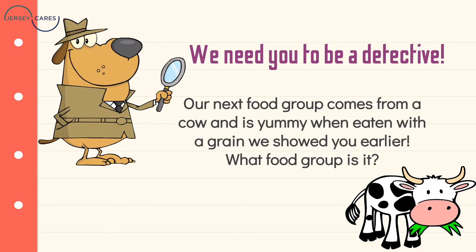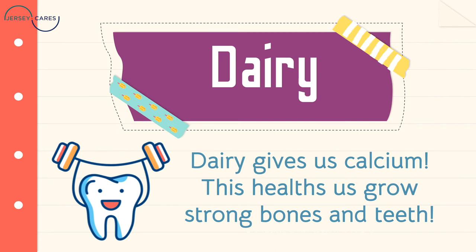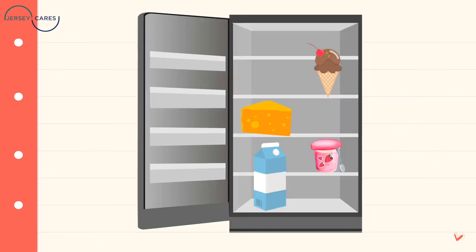Now we need you to be a detective. Our next food group comes from a cow and is yummy when eaten with a grain. What food group is it? I'll give you a couple of seconds. If you guessed dairy, you're right! Dairy gives us calcium, which helps us grow strong bones and teeth.